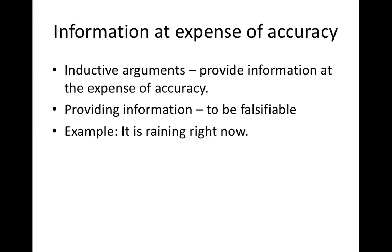On the other hand, inductive arguments provide information at the expense of accuracy. When you provide information, that information is falsifiable — capable of being true or false. Example: it is raining right now. If it is not raining where you are, then the statement is false for you. That's why we say any empirical information is falsifiable.